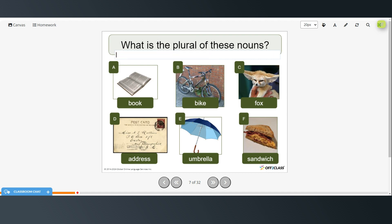So book, the plural is books. Just add the S. Bike, the plural is bikes. Again, we just add an S. Fox. Well, fox ends in an X, so it has to become foxes with the ES. Address ends in SS, so we have to add an ES. So the plural is addresses.